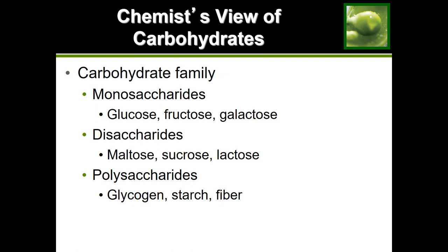Carbohydrates are made of building blocks called monosaccharides. When we put more than one together, we end up with different categories. We have disaccharides, which is two units of monosaccharides linked together, and then polysaccharides, which is when we have more than 10 linked together. We're going to take a look at each one of these categories.